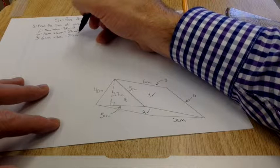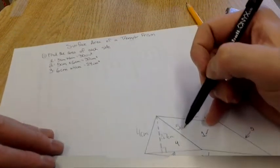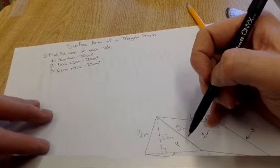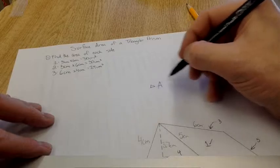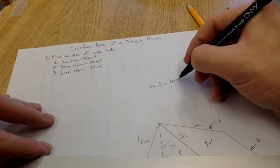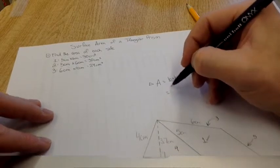Side four is a triangle, so I'm going to need to find the area of that triangle. And I know the area for a triangle equals base times height divided by two.